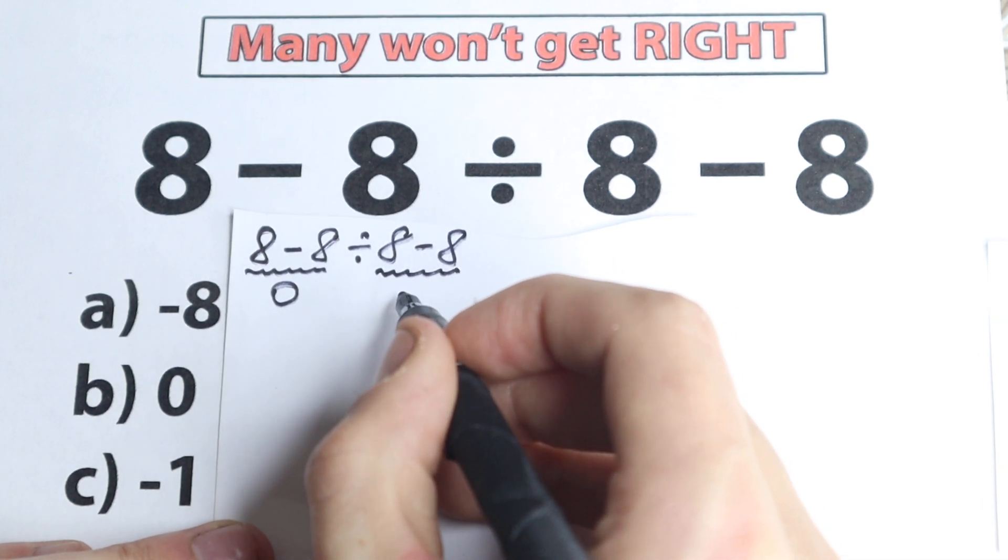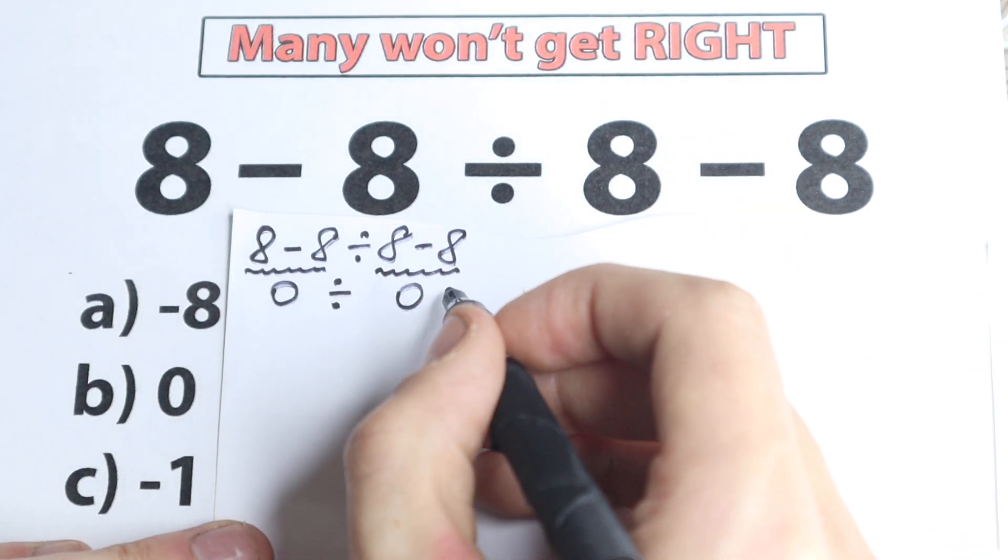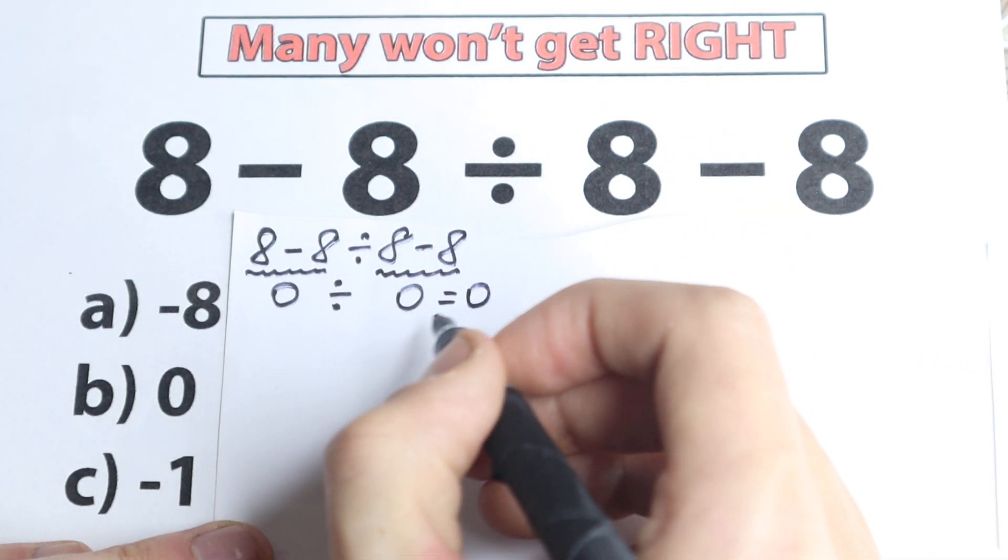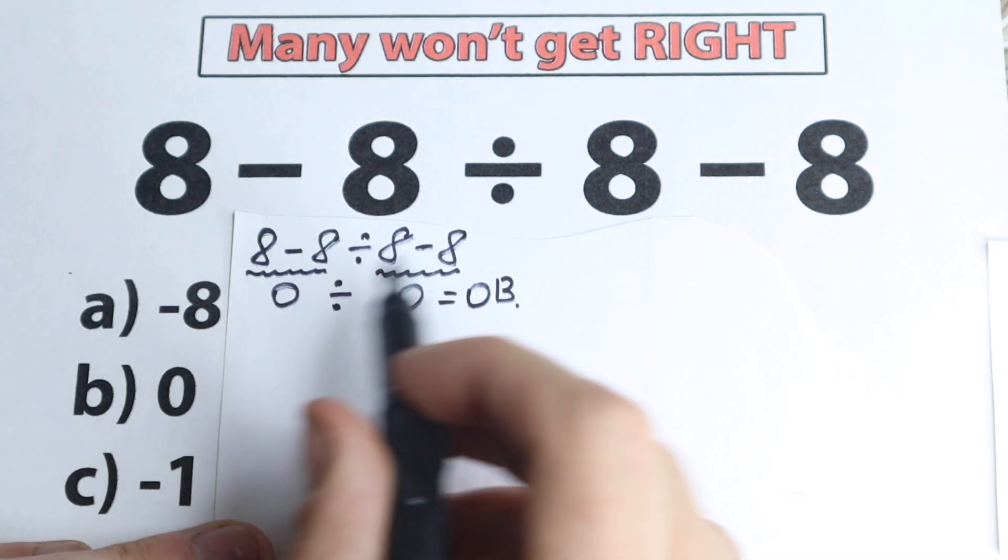which is equal to 0 as well, and we have this division in the middle, 0 divided by 0, someone write that equal to 0, and this is option B, so this is the first solution, so one type of student solve this question like that.